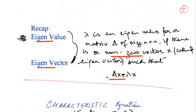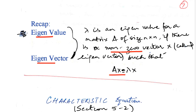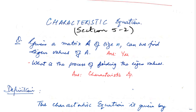Remember, this equation is basically saying that when A acts on the nonzero vector x it scales the vector — lambda is a scalar quantity. Let's go ahead and now learn about more concepts in this topic.